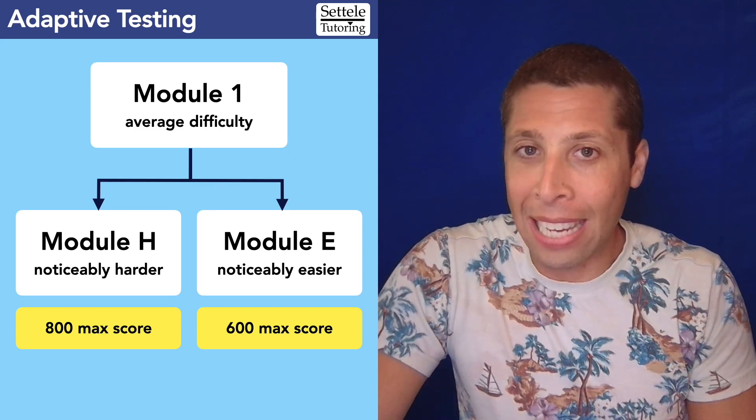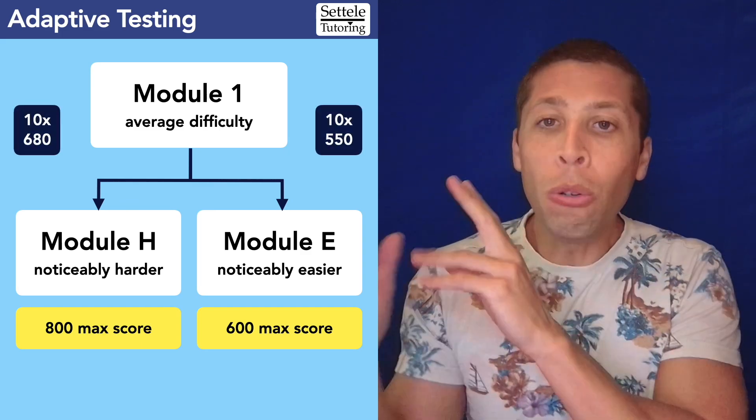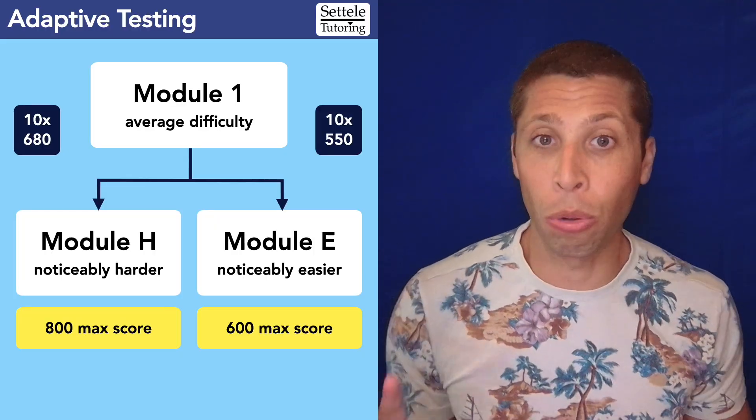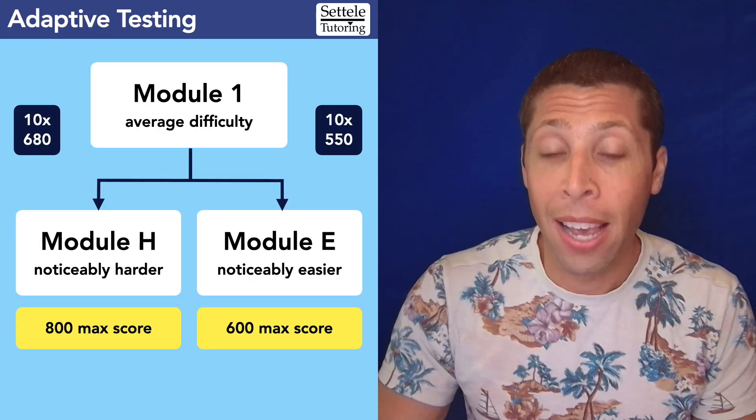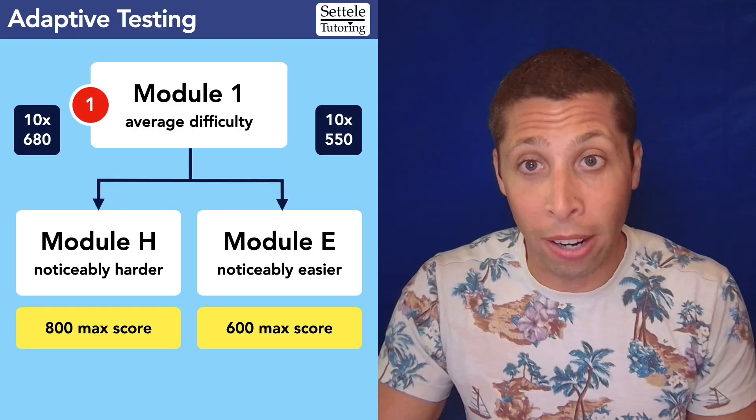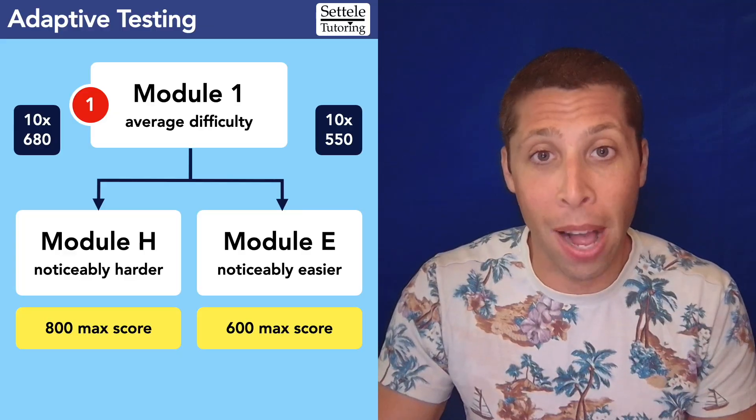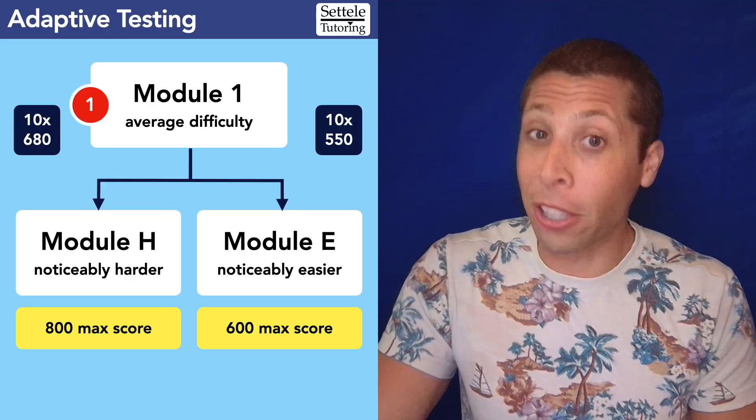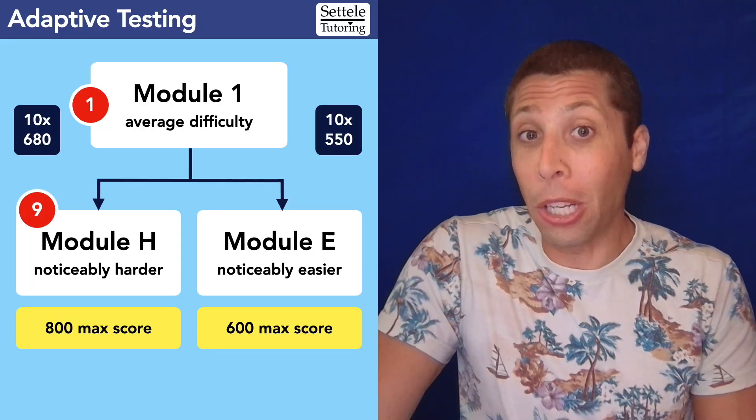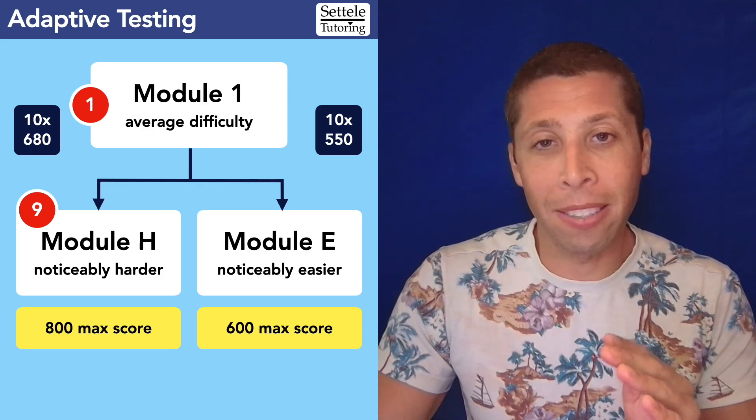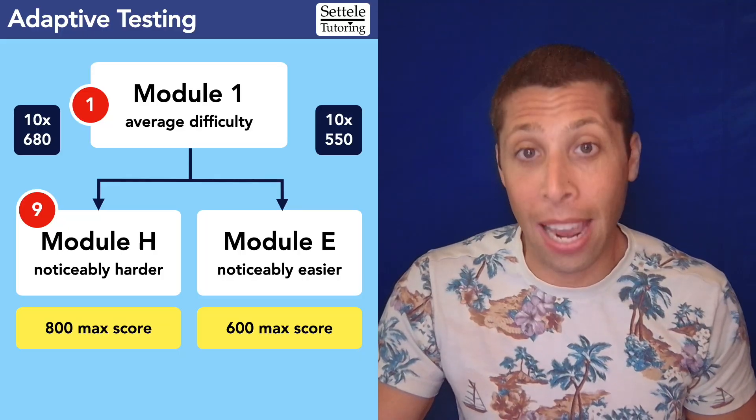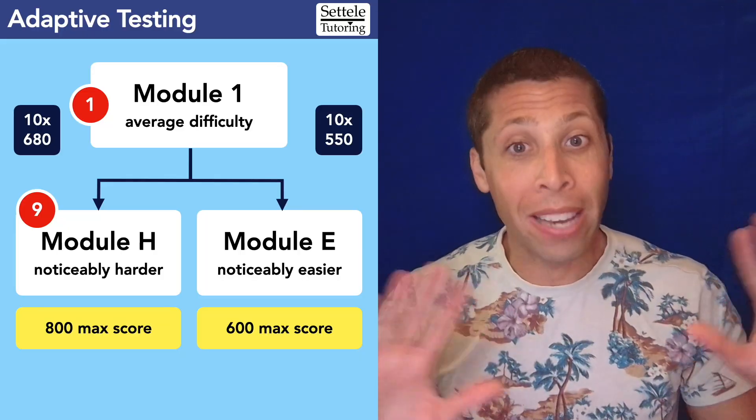And so with these adaptive testing rules, weird things can happen. Let's look at an example. We could have two students who both get 10 questions wrong but get very different scores. Let me walk you through how this might work, starting with the 680 student on the left. They would probably do very well in the first module—maybe they only get one question wrong there. So that's great. They're definitely going to get placed in the harder second module. But because it's harder, they're going to get harder questions and they're going to get more wrong. So let's say they get nine questions wrong in that second module. That's still pretty good, but that's 10 questions overall. Using our estimate of 10 to 20 points a question, I would guess that they're probably going to get something like a 680 on the test overall.